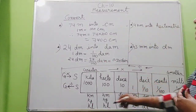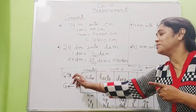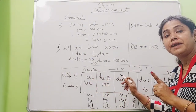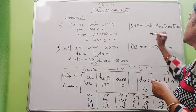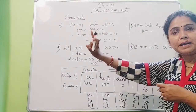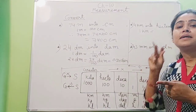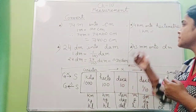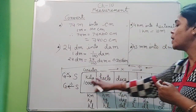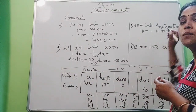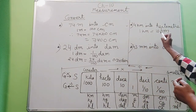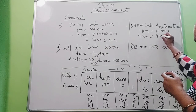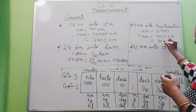Next: convert 4 kilometers into hectometers. Kilo to hecto is only one jump, and we are moving from greater to smaller, so we multiply by 10. First, the standard conversion: 1 kilometer equals 10 hectometers. Therefore, 4 kilometers equals 4 into 10, which is 40 hectometers.